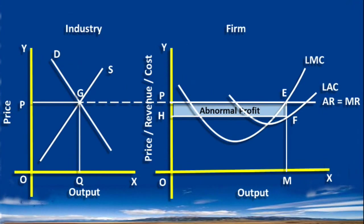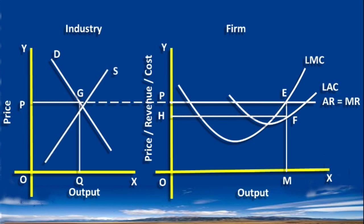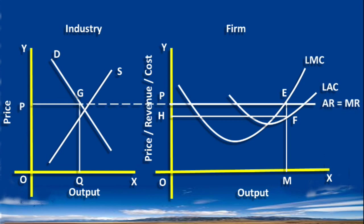PHFE is supernormal profit. Attracted by this, new firms enter the industry. With the result, the supply gets increased and the supply curve moves to the right. The price of the product falls.